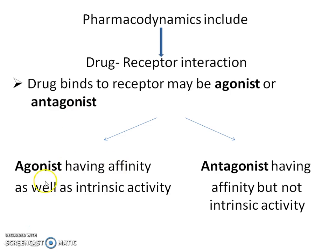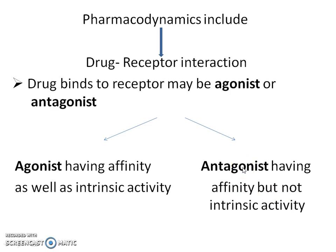An agonist has affinity as well as intrinsic activity, meaning it will bind to a particular receptor and shows a pharmacological effect. Whereas an antagonist has affinity but not intrinsic activity, meaning it will bind to a particular receptor but does not show a pharmacological activity.